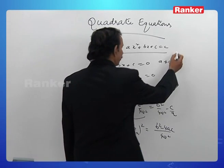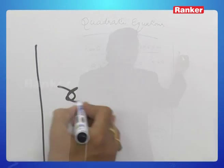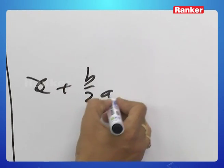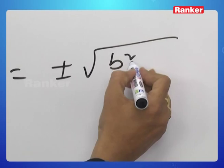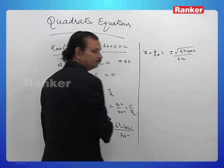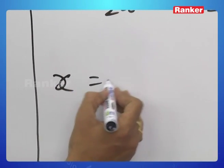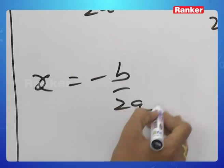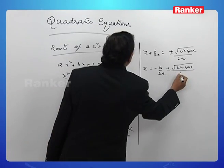And from this, x plus b/2a equals plus or minus root of b² minus 4ac by 2a. And send plus b/2a to that side so that it becomes minus b/2a plus or minus root of b² minus 4ac by 2a.